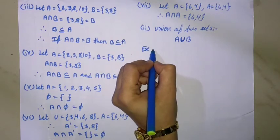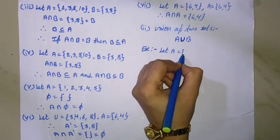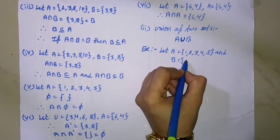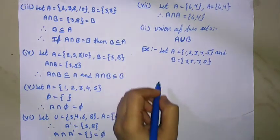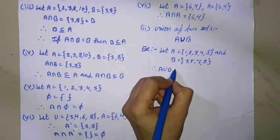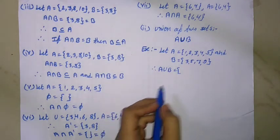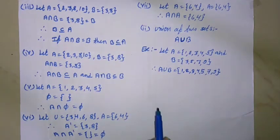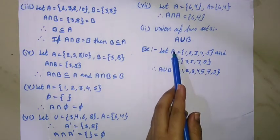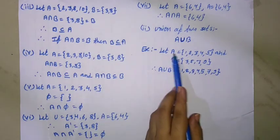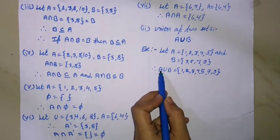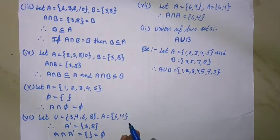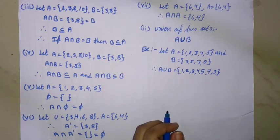For example, let A equal to {1, 2, 3, 4, 5} and B equal to {3, 5, 7, 9}. A union B contains all elements of set A and set B. Therefore A union B equal to {1, 2, 3, 4, 5, 7, 9}.